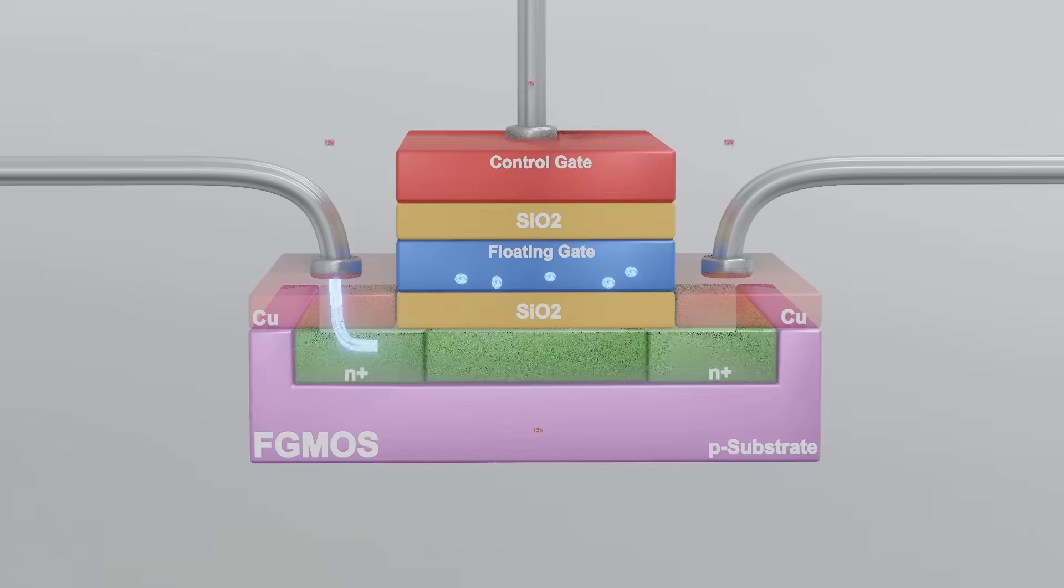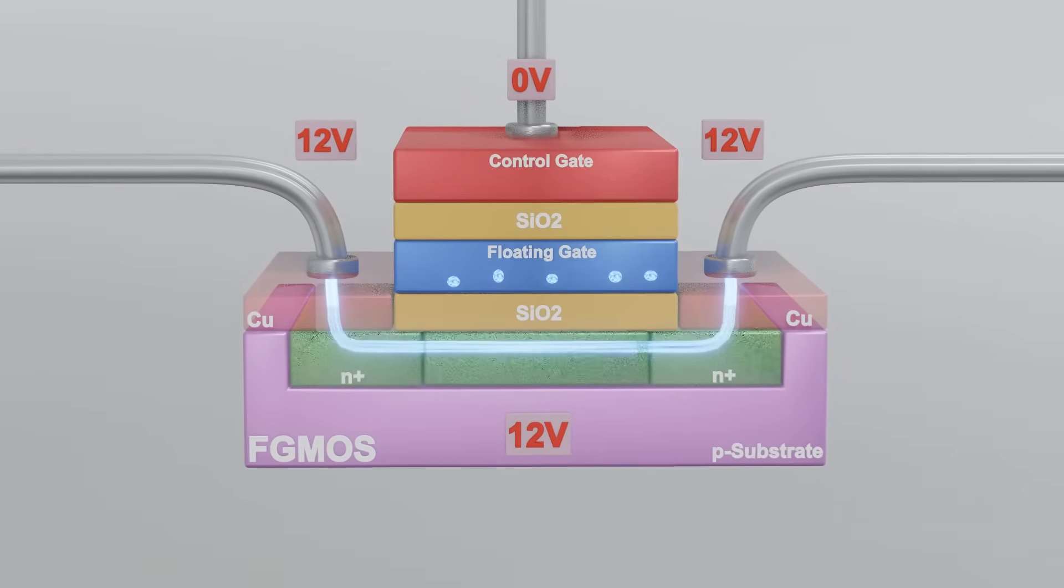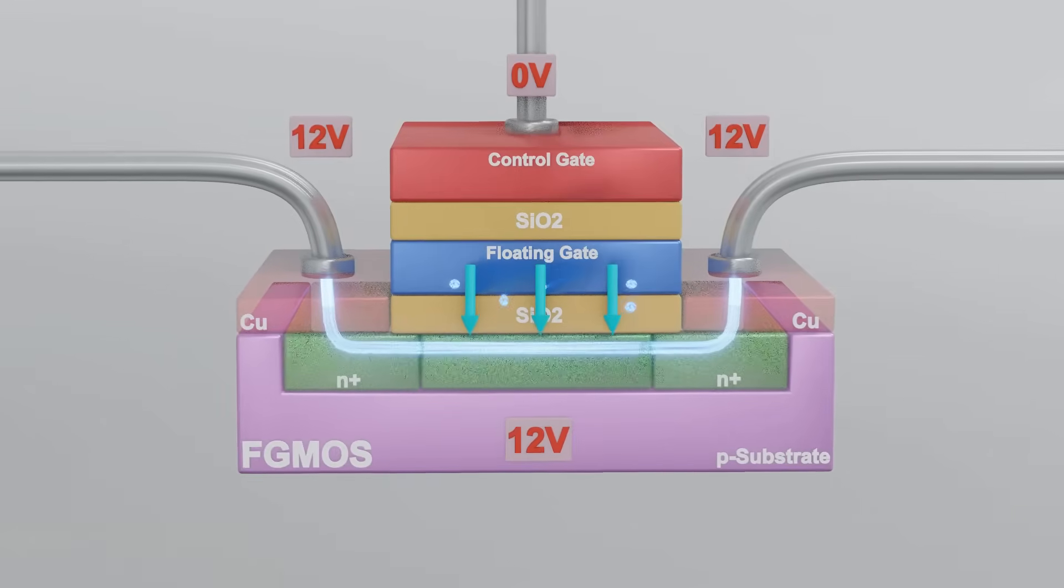To remove the electrons, the right amount of voltage is applied when the electric field from the control gate pushes the electrons from the floating gate into the substrate.